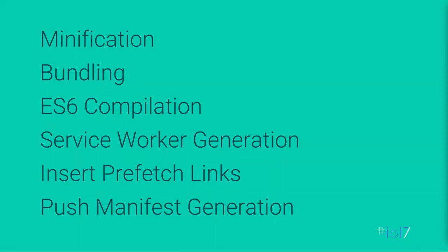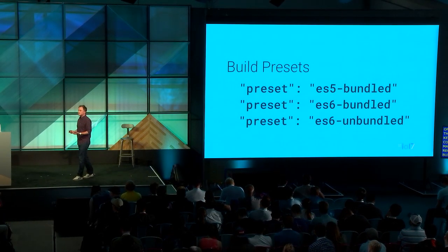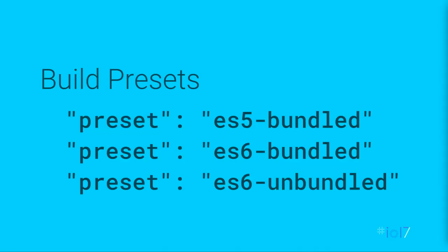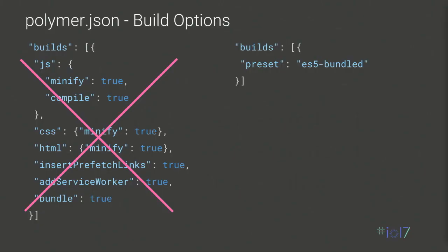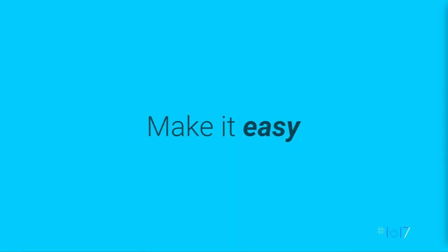So that's what build does — minification, bundling, compilation, and all this stuff. Even though we've tried to make each item easy to configure, it's still a lot of things to keep in your head. So we recently introduced build presets, which include the three most common and useful presets. We have ES5 bundled for older browsers or universal builds, ES6 bundled for newer browsers where your server may not support HTTP2 push, and ES6 unbundled for that full purple incremental serving. Your polymer.json can go from specifying each option individually to just specifying the preset. We want this to be as easy as possible — it shouldn't be difficult to build an incredibly fast app, even for emerging markets.